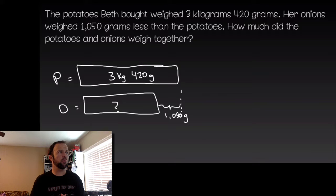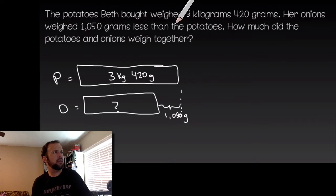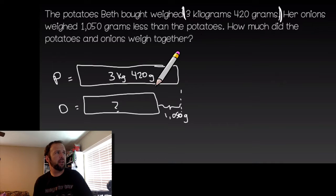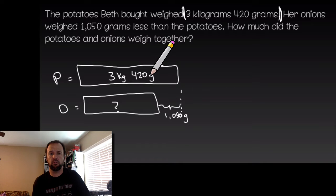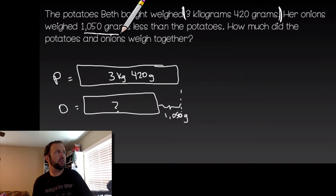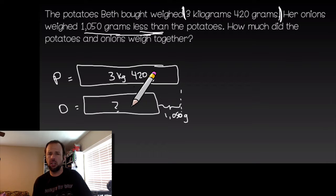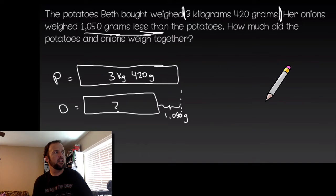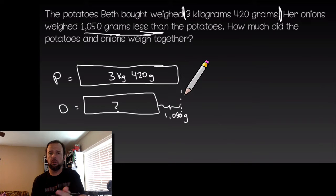Here's where I started — I just had to sketch something out to see what I was looking at. From the problem, Beth bought potatoes that weighed 3 kilograms 420 grams, so I drew a tape diagram — just a rectangle — to represent that. The onions weighed 1050 grams less than the potatoes, so we don't really know how much the onions weigh. What do you guys think we're gonna have to do to solve this?